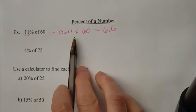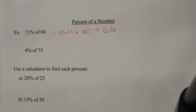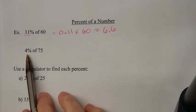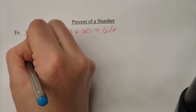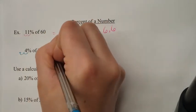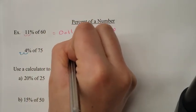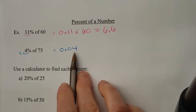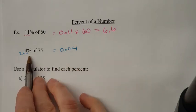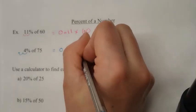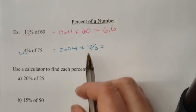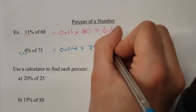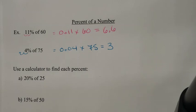So that's what 11% of 60 is. So let's try that again. The first step we have to do is change the percentage to a decimal. To do that, you take the decimal place and move it once, twice. So in this case here, we get 0.04, because we moved it one time, two times. 'Of' means times 75, and when you put that in your calculator, we get 3.